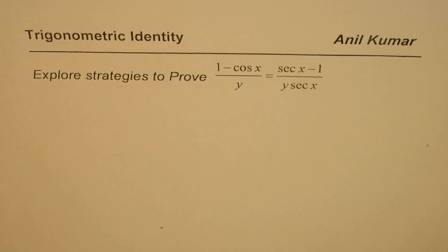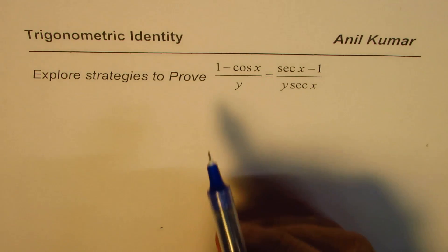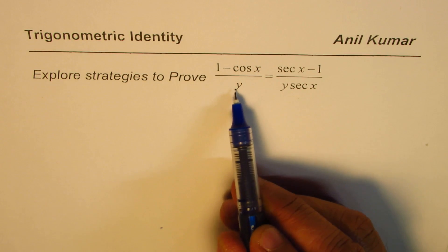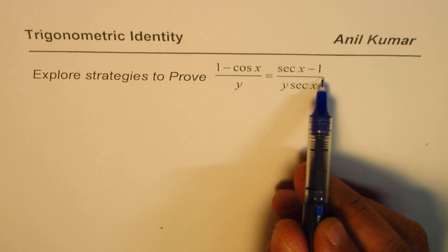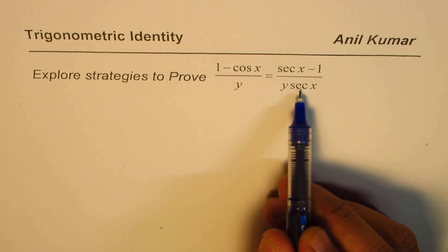I am Anil Kumar. We are learning strategies to solve or prove trigonometric identities. In this particular video, we need to prove that (1 - cos x)/y equals (sec x - 1)/(y sec x).